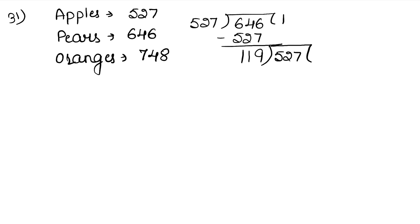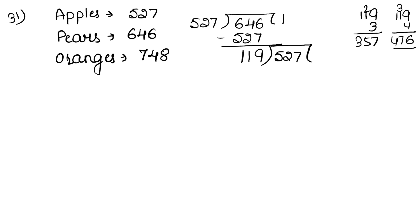Now 527 divided by 119. We check: 3 times 119 gives 357 — that is less. 4 times: 4×9 is 36, carry 3; 4×1 is 4, plus 3 is 7; 4×1 is 4. So 4 times gives 476. Subtract: 7 minus 6 is 1; 12 minus 7 is 5. Remainder is 51. Now 51 is inside.